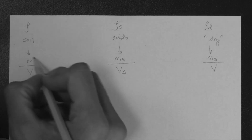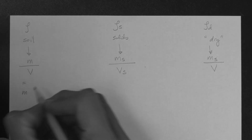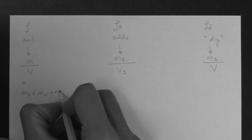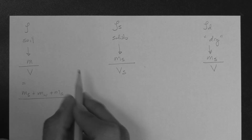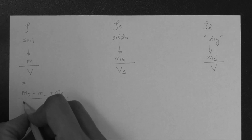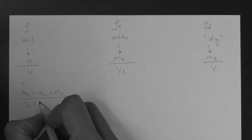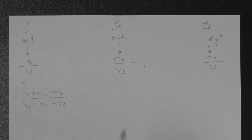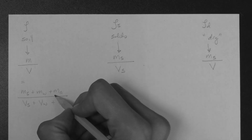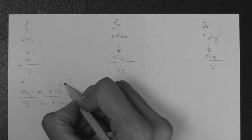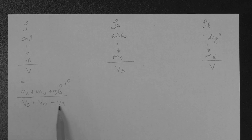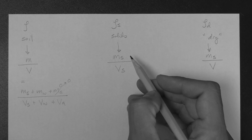The mass of soil is the mass of solids plus the mass of water plus the mass of air. The volume of soil is the volume of solids plus the volume of water plus the volume of air. Now, because air has such a low density, we can neglect the mass of air. But air can occupy large volumes, so we have to keep the volume of air intact in the formula.